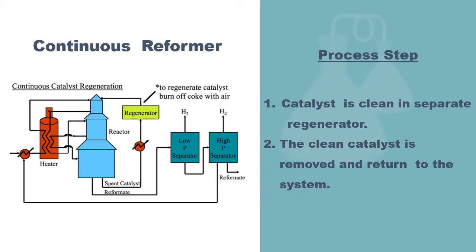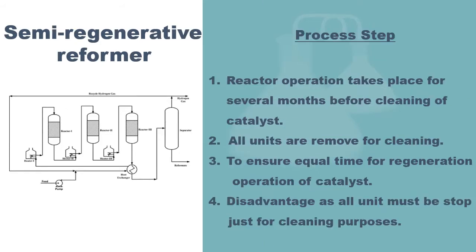The first type of configuration is the continuous reformer, where the catalyst is cleaned in a separate regenerator and the cleaned catalyst is then returned to the system. The second configuration is the semi-regenerative reformer. The reactor operates as usual for several months before cleaning. When the cleaning process takes place, all units are required to be shut down to ensure equal time for regeneration of catalysts. This configuration has a disadvantage as the unit must be stopped for cleaning.